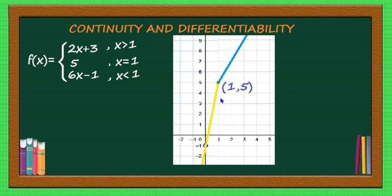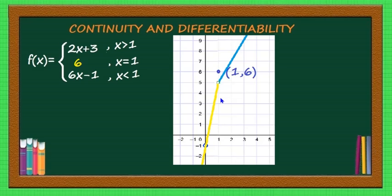Now change the function so that f(1) = 6 instead of 5. The left-hand limit and right-hand limit are both still equal to 5. But f(1) = 6. There is a break in the graph — the point at (1, 5) is missing and shifted to (1, 6). Even though LHL = RHL, the value of the function is different, so the function is not continuous at x = 1.